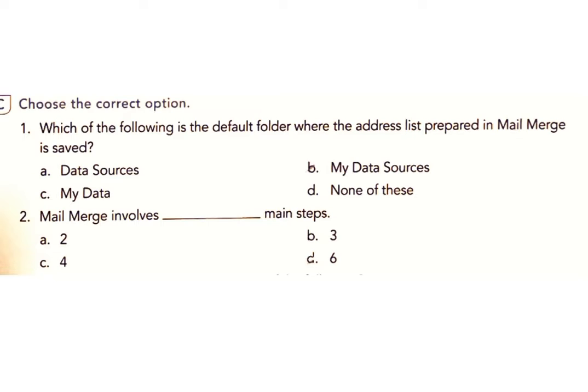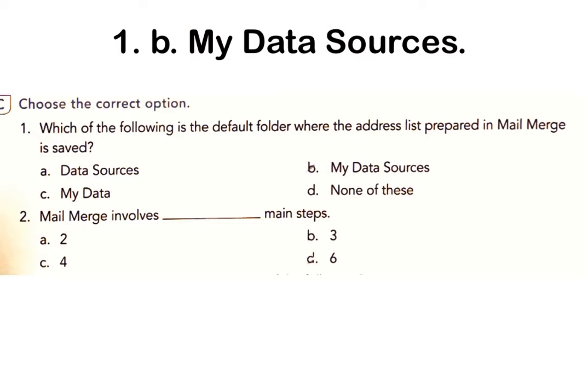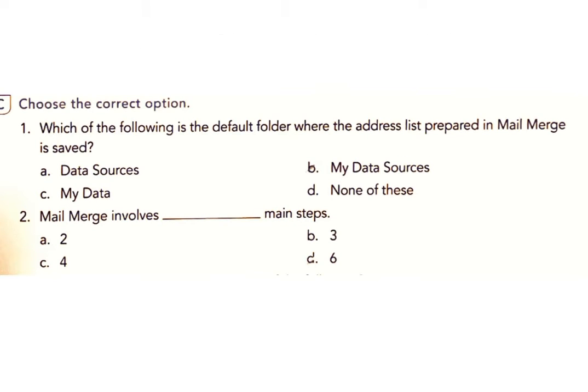C: Choose the correct option. A: Which of the following is the default folder where the address list prepared in mail merge is saved? Options: A) Data Sources, B) My Data Sources, C) My Data, D) None of these. Answer: B) My Data Sources.